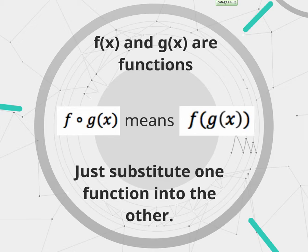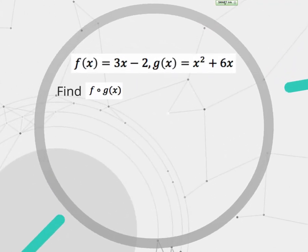So what we're going to do is I'm going to give you two functions, f of x and g of x, and we're going to do four different situations with those same functions to kind of cover those bases. And the functions we have are f of x is 3x minus 2, and g of x is x squared plus 6x.